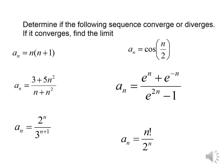Here are some examples from your notes. We're going to take the limit as n approaches infinity for each one. For the first example, the limit as n approaches infinity of n times (n+1): because n is going towards infinity and (n+1) is going towards infinity, infinity times infinity is infinity, so we say this sequence diverges.